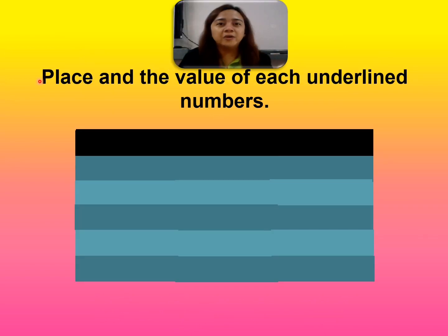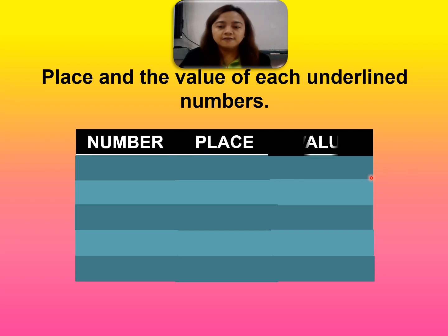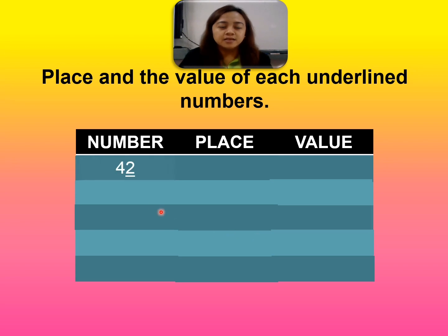I'm going to show you the place and the value of some numbers. So we have here the number, the place, and the value — the place and value of each underlined number. Let's start. So we have number forty-two.